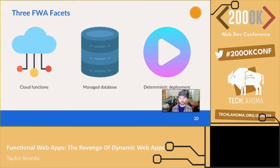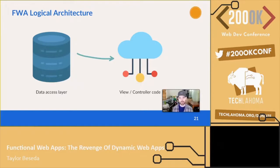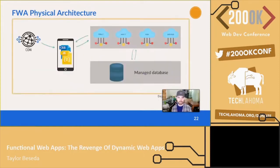There's no real framework here — adhering to these three principles makes your application a functional web app. The logical architecture of an FWA is actually pretty similar to JAMstack in that it's essentially a two-tier application: a data access layer for persistence, and view/controller code with application logic living in a cloud function. It's really easy to reason about your application this way. Now, you might worry about shoving all that code into a single cloud function — and you're not wrong — but we actually divide it across a dozen or dozens of cloud functions.